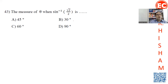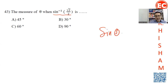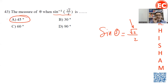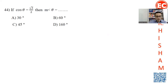Question 43: Find the sine inverse of root 2 over 2. Sine inverse means: which angle has sine equal to root 2 over 2? Anything related to root 2 over 2 — the angle is 45 degrees.